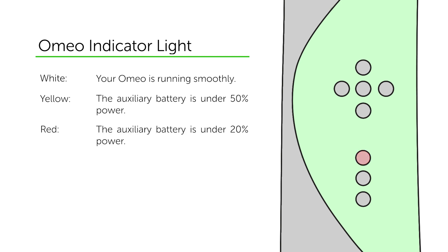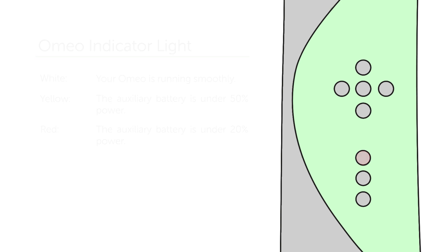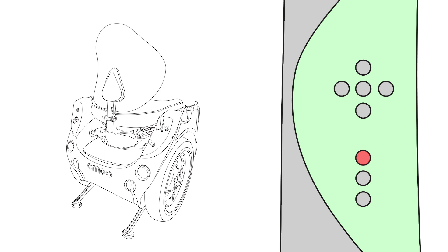If the light continuously pulses red, this means the auxiliary battery in your Omeo is under 20% battery power. During this time, if you need to raise your machine's legs, you will need to push and hold the leg raise button for 7 seconds.